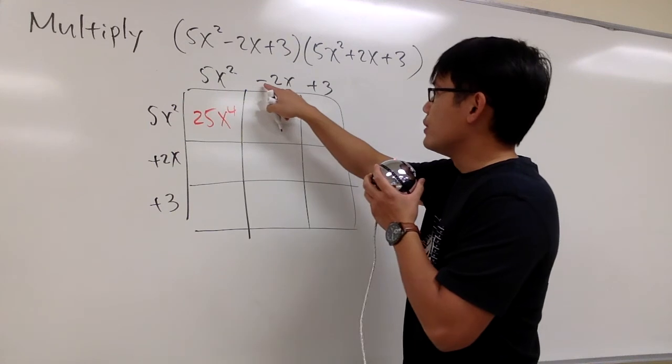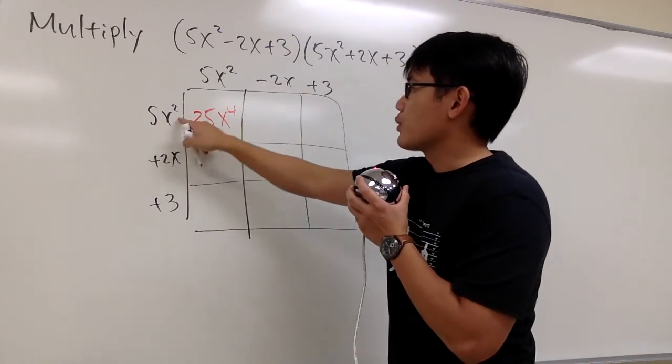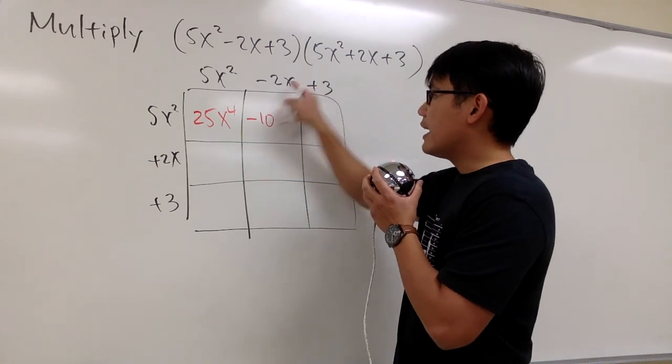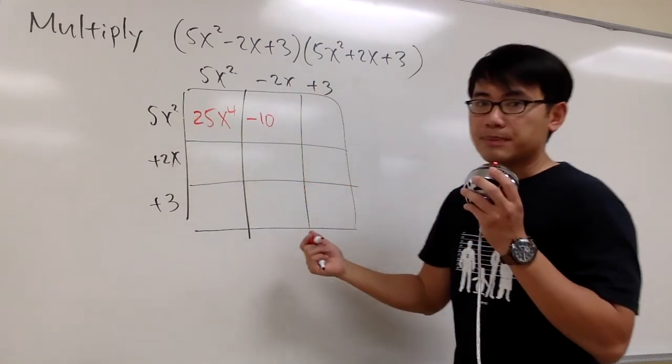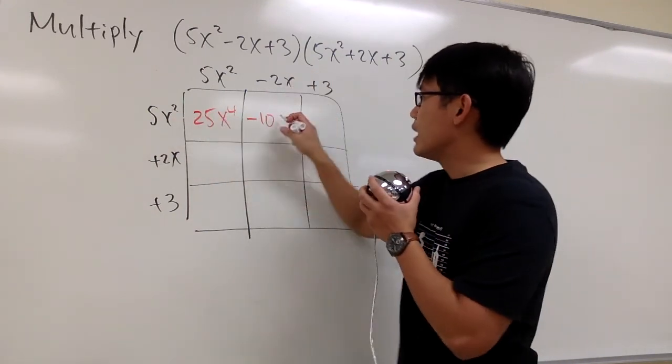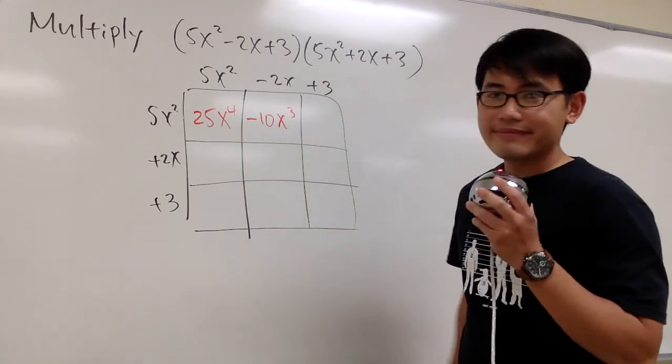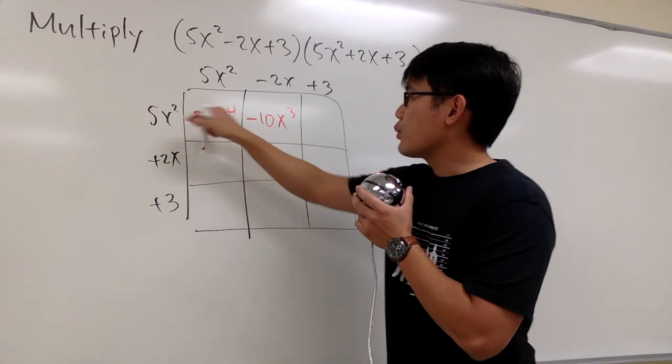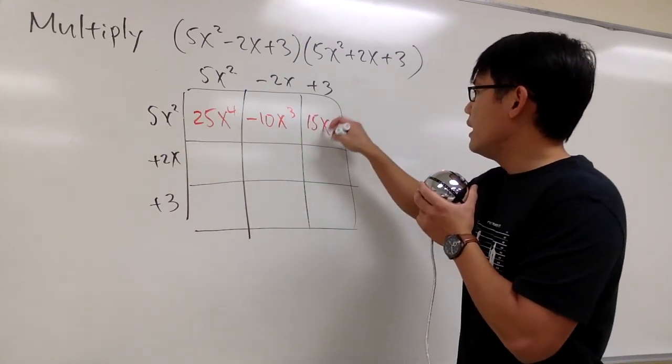So for this one, we do -2x times 5x². So -2 times 5 is -10, and x times x², we add the exponents up, 1 plus 2, we have x to the third power. And we'll continue. For this one, we do 3 times 5x². So we have 15x².